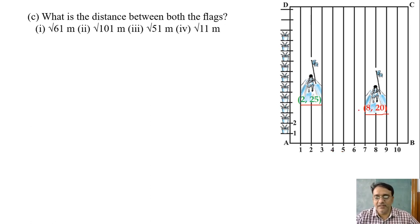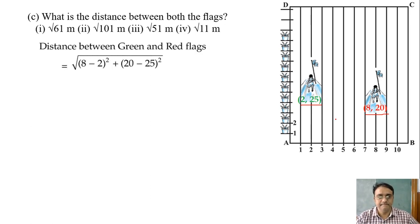8 minus 2 whole square plus 20 minus 25 whole square under root. So this we will get 36 plus 25 under root, under root 36 plus 25 will get under root 61 meters. So which option is the correct one? Option 1.